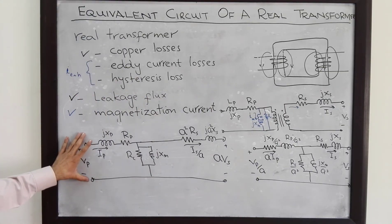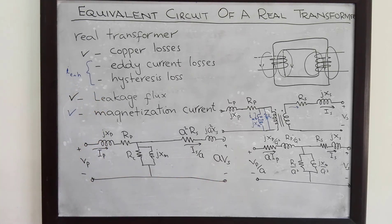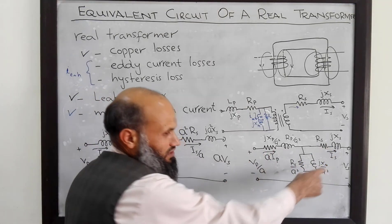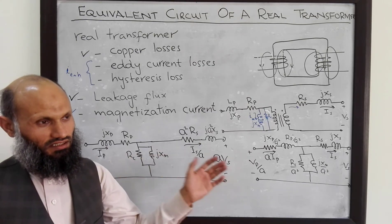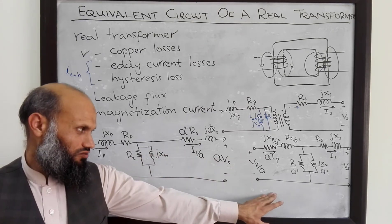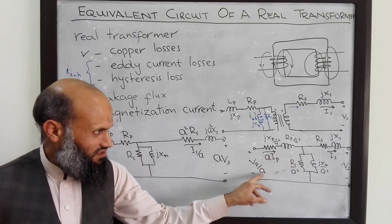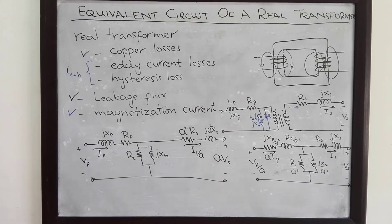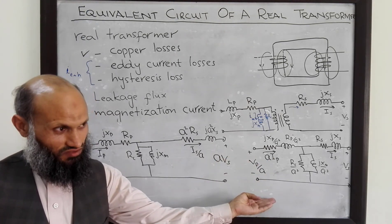Essentially, both equivalent circuits — referred to primary or secondary — can be somewhat tedious to analyze, especially when there are more loops. Although complex circuit analysis is possible, it becomes quite involved. Therefore, we proceed to sketch a simplified equivalent electrical circuit of a transformer.